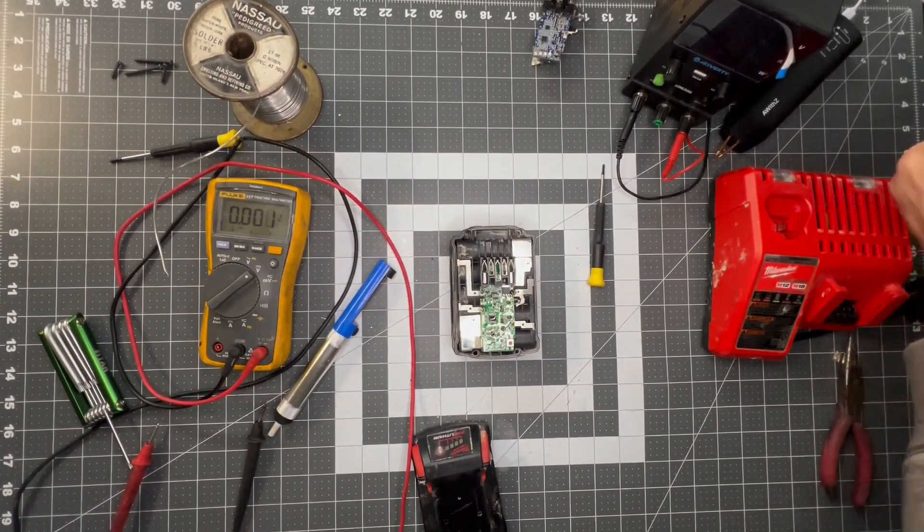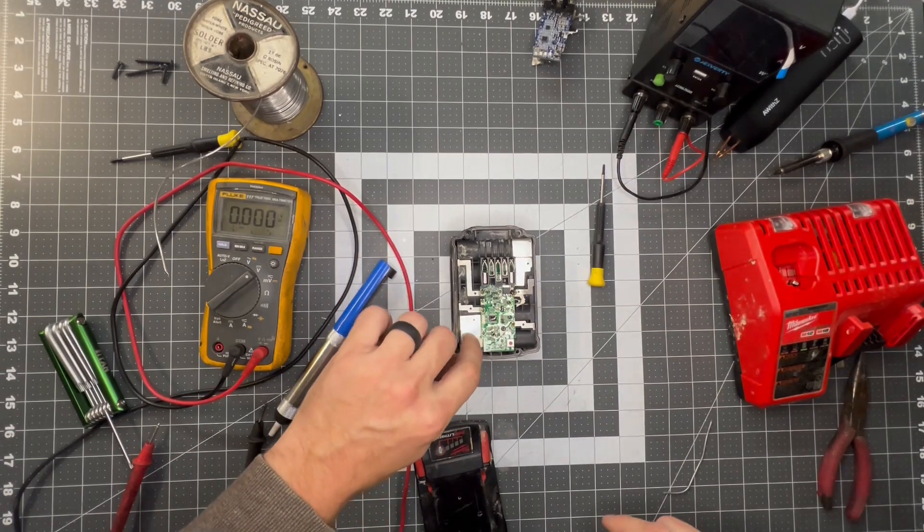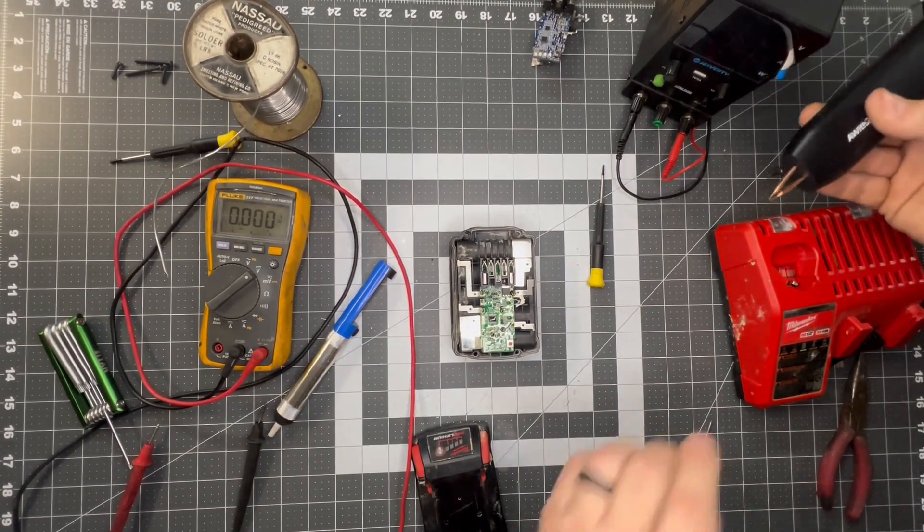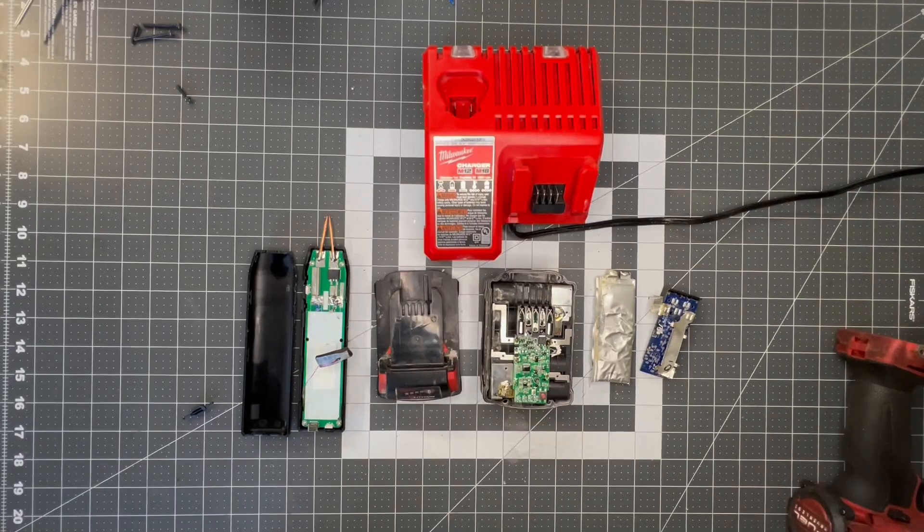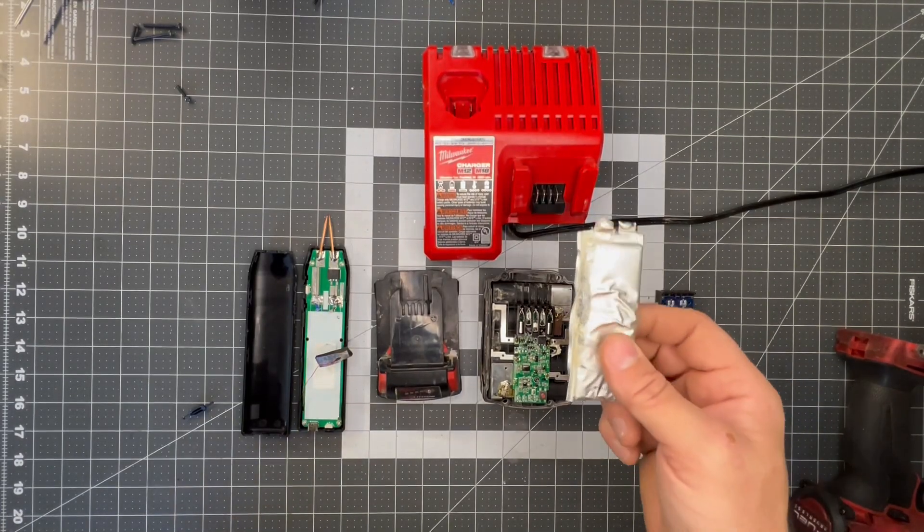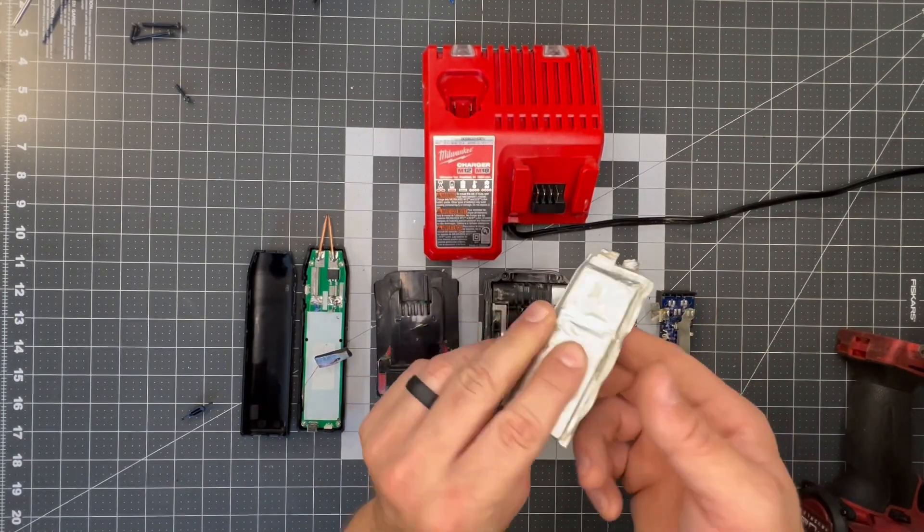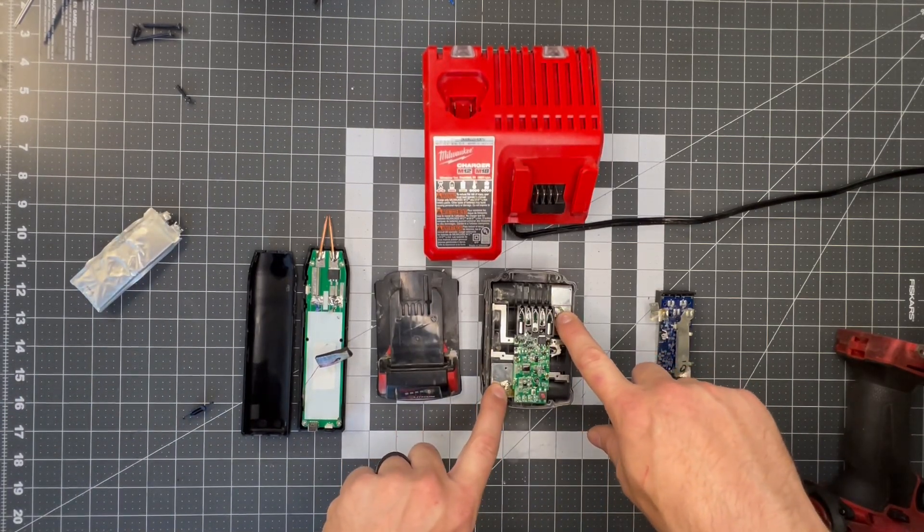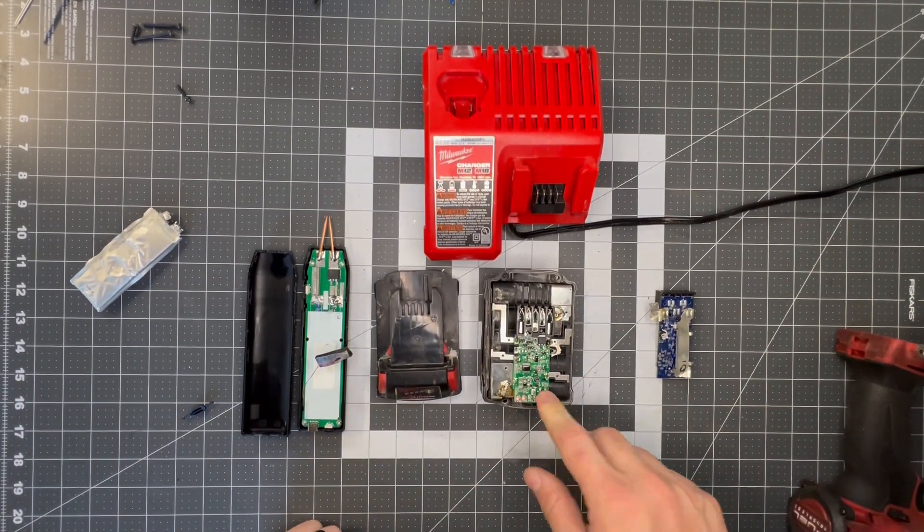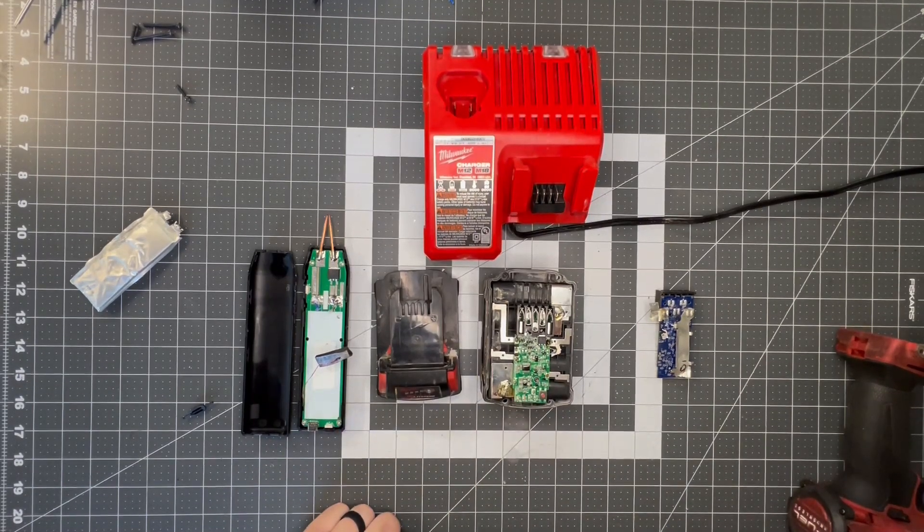So now we need to spot weld this pad and this pad. To do that, I have a battery spot welder and a fun little bit of irony: the battery in my battery spot welder has failed. So I went ahead and just soldered the two extra tabs and the battery still works. So we're going to put it back together and test it out.